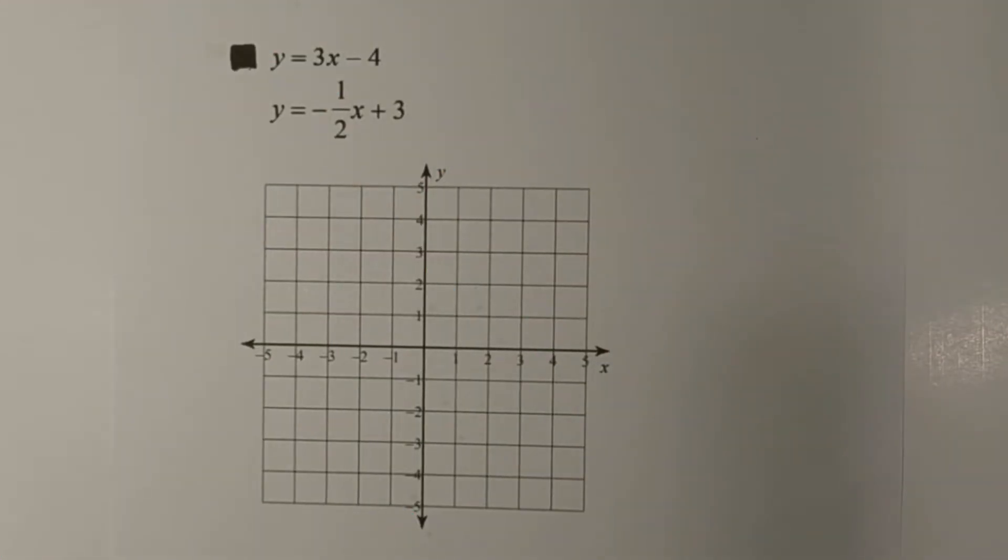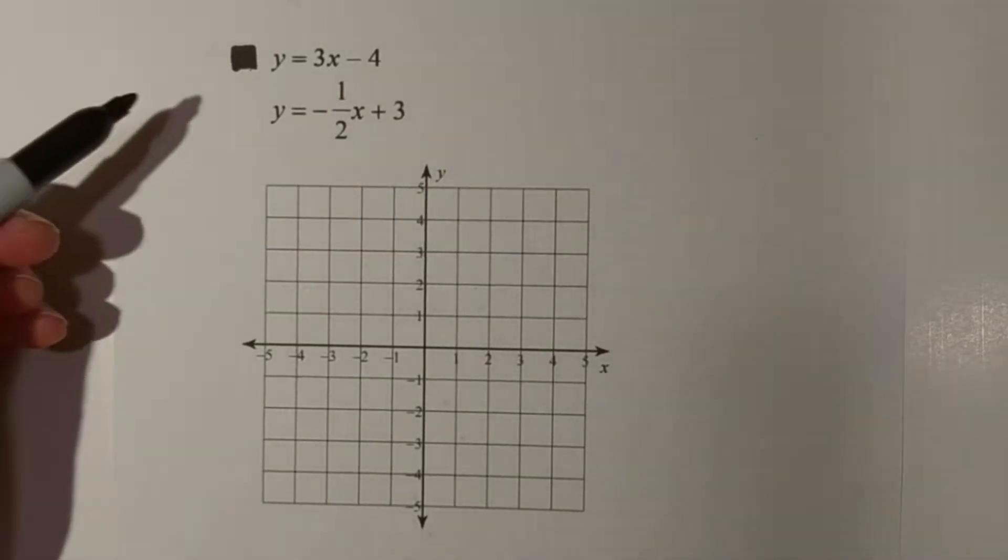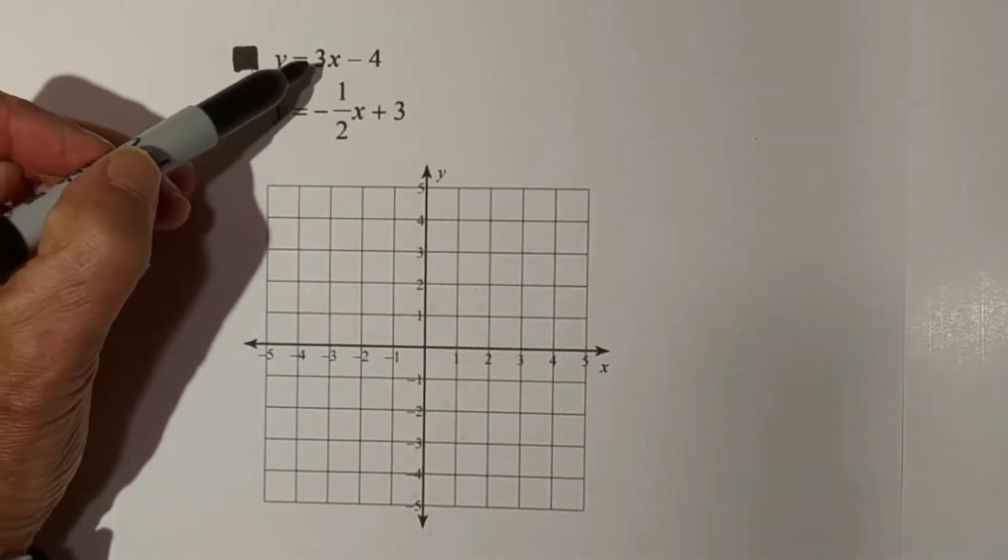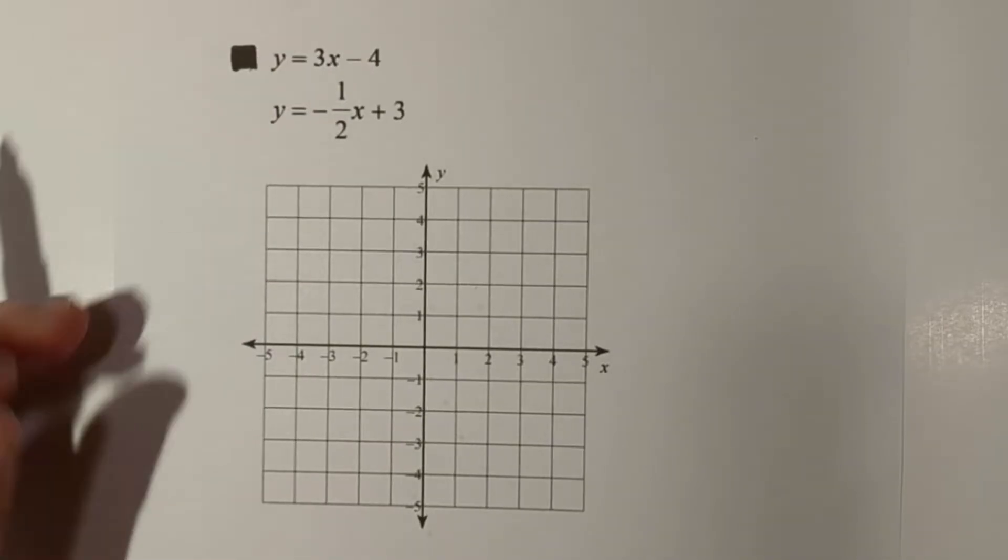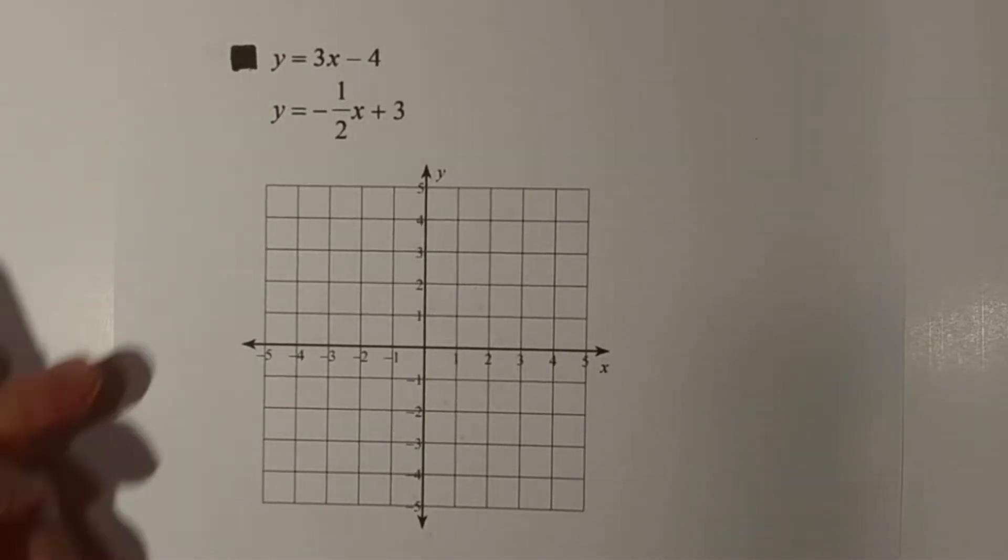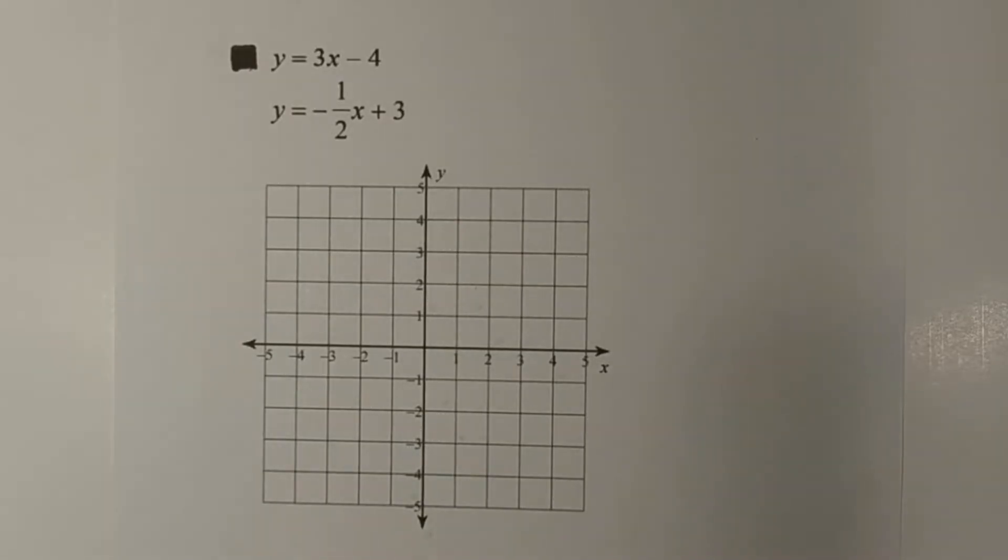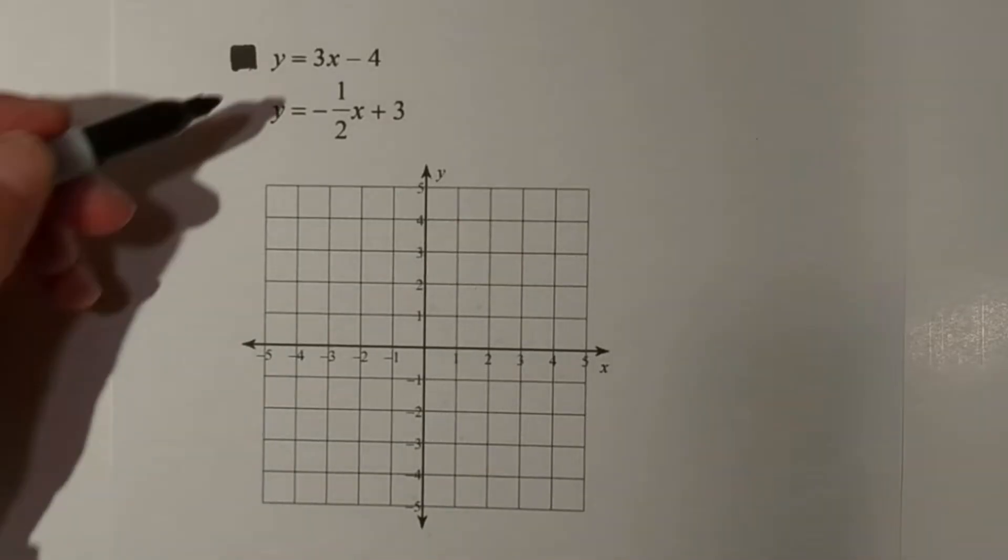Okay, let's go ahead and solve this system of equations by graphing. Both of these are in slope-intercept form. Remember, this is the slope and this is the y-intercept. So what we're going to do is graph both of these lines, and where they intersect will be our solution.